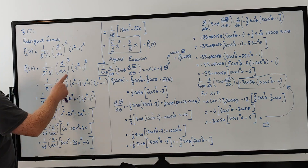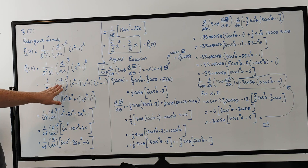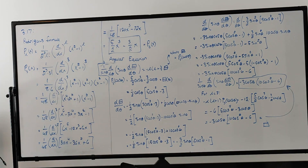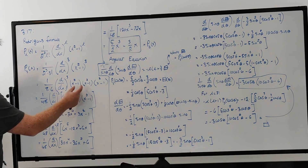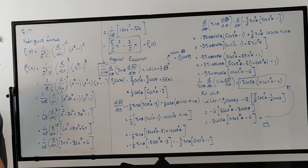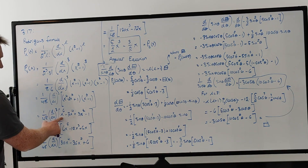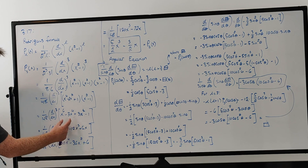Writing this out, we have 1 over 48, and we haven't applied the derivatives yet. We first expand x squared minus 1 cubed. Doing the first two factors gives x to the fourth minus 2x squared plus 1, times another x squared minus 1. Multiplying through gives x to the sixth minus 3x to the fourth plus 3x squared minus 1.